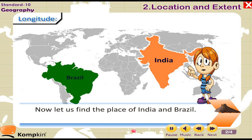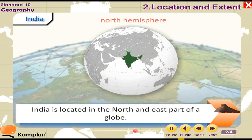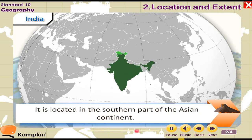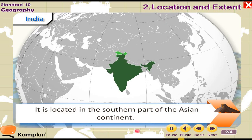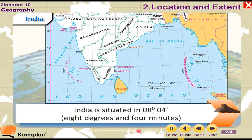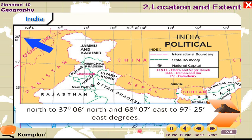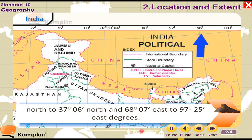Now let us find the place of India and Brazil on the globe. India is located in the north and east part of the globe, in the southern part of the Asian continent. India is situated between 8 degrees 4 minutes north to 37 degrees 6 minutes north latitude, and 68 degrees 7 minutes east to 97 degrees 25 minutes east longitude.